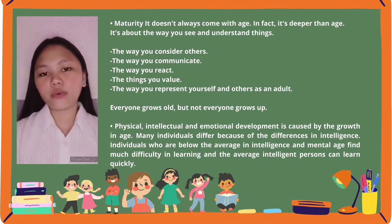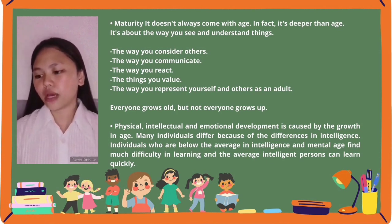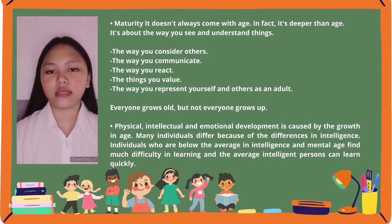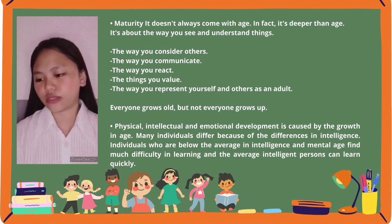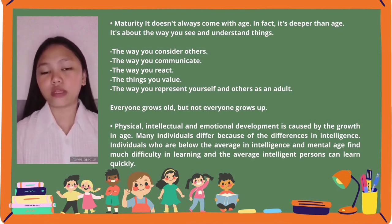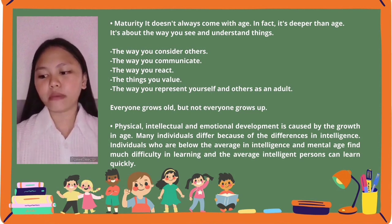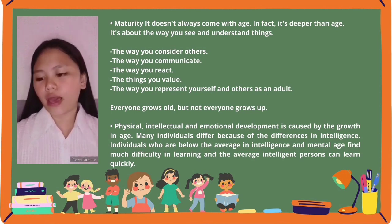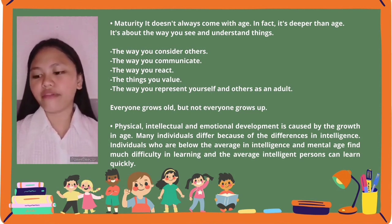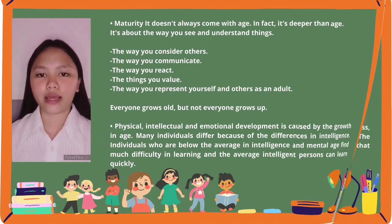Many individuals differ because of differences in intelligence. Individuals who are below average intelligence find much difficulty in learning, while the average intelligent person can learn more quickly.